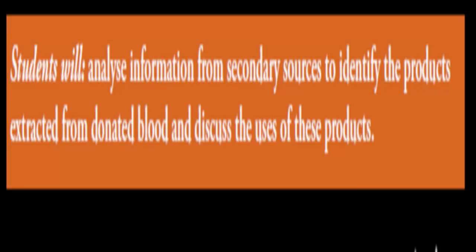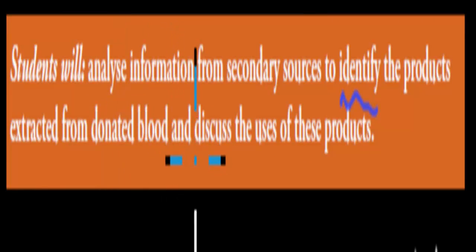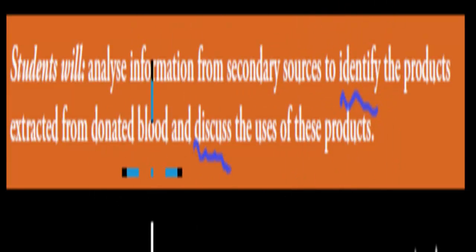Welcome back. In the last video we talked about how blood moves through the body and how the actual chemical composition changes as it moves through the body. In this video I'll cover the next dot point which talks about the native blood and the components extracted from that blood. The dot point says students will analyze information from secondary sources to identify the products extracted from donated blood and discuss the use of these products. There are two parts: identify what products are in donated blood, and then discuss what these products are used for.